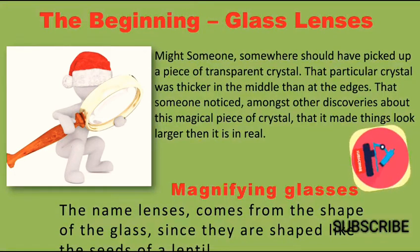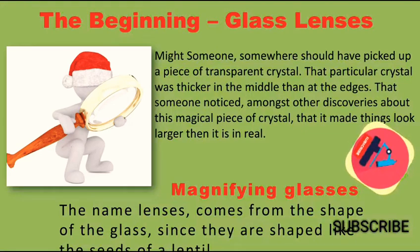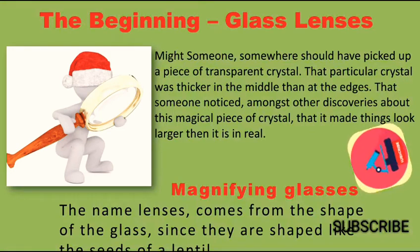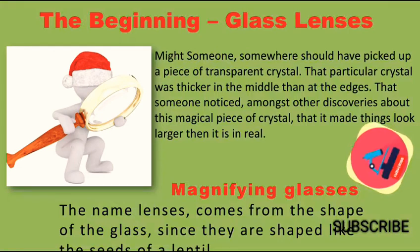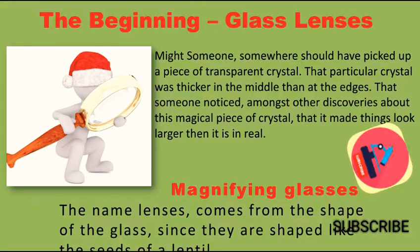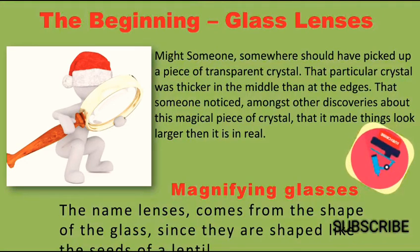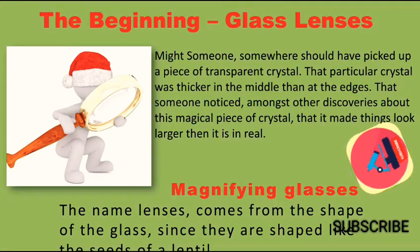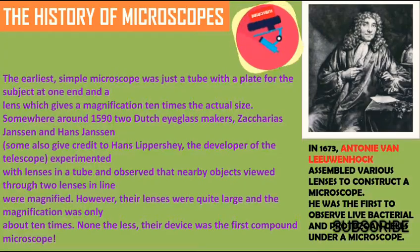The beginning of glass lenses — someone somewhere must have picked up a piece of transparent crystal that was thicker in the middle than at its edges. That person noticed that this magical piece of crystal made things look larger than they are in real life. Magnifying glass lenses get their name from the shape of the glass, since they are shaped like the seeds of a lentil.